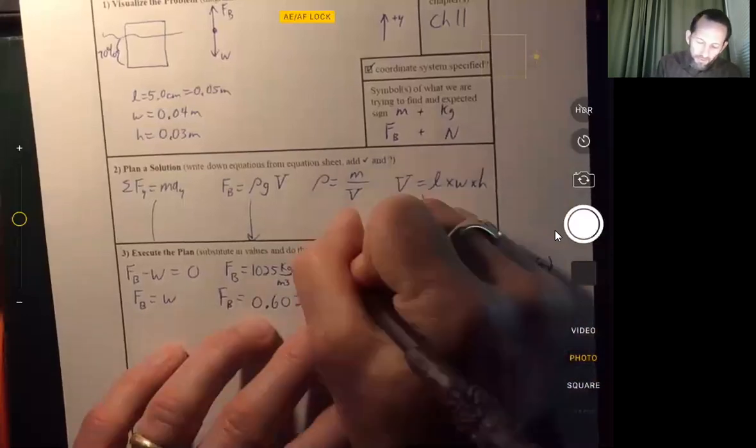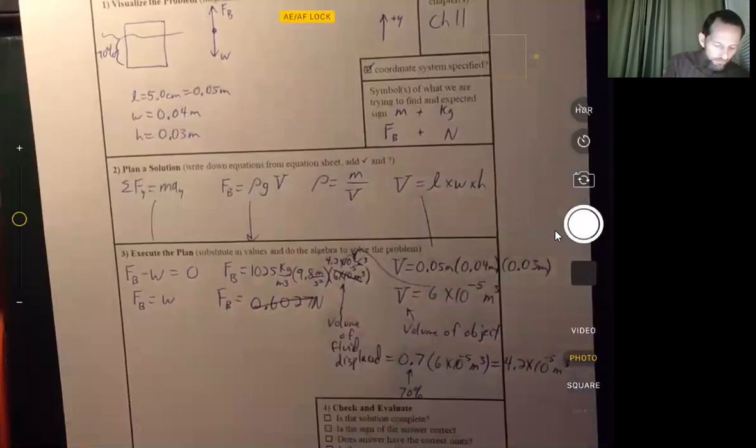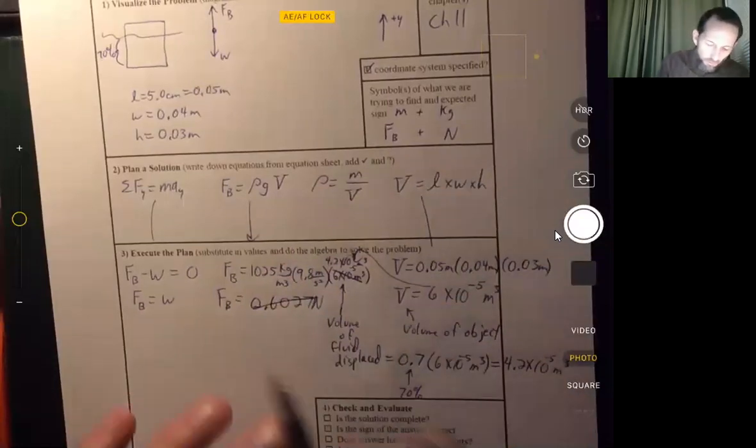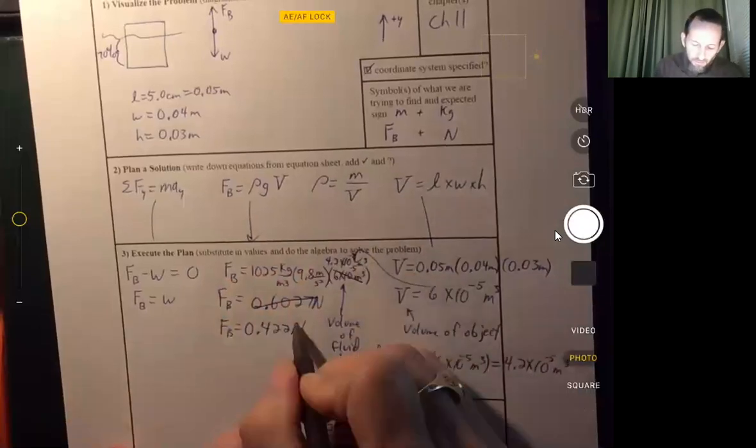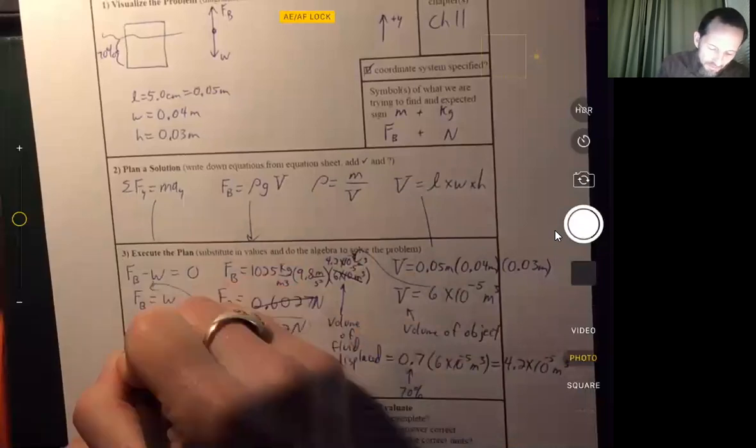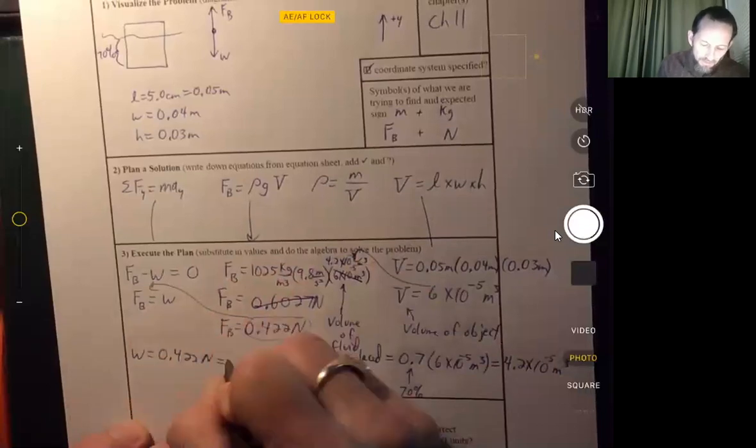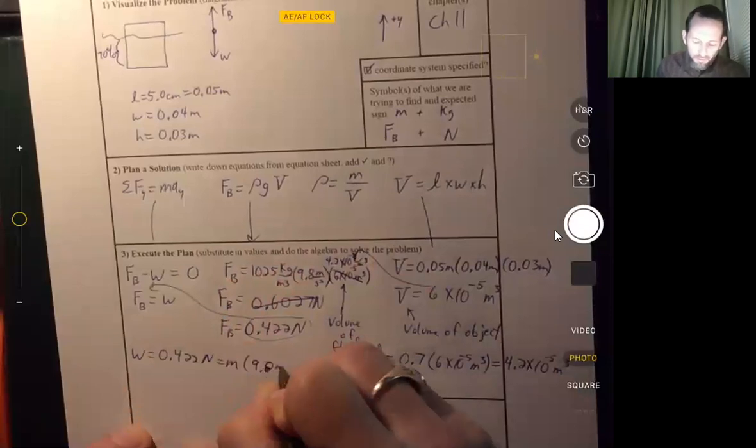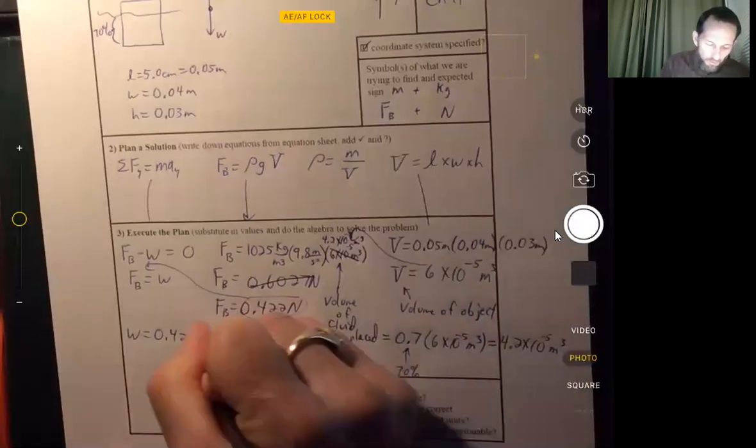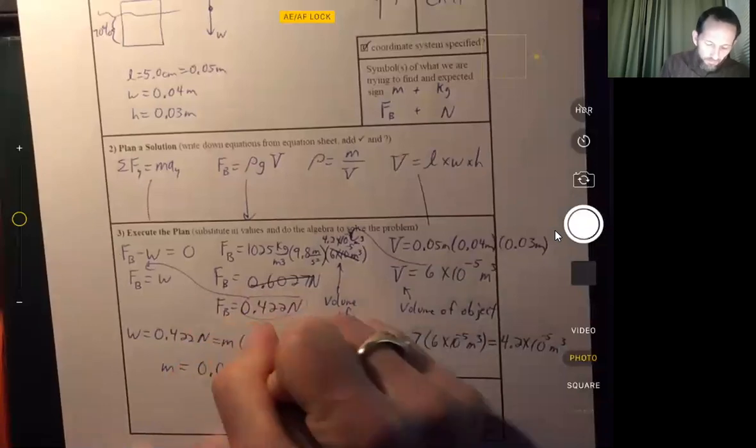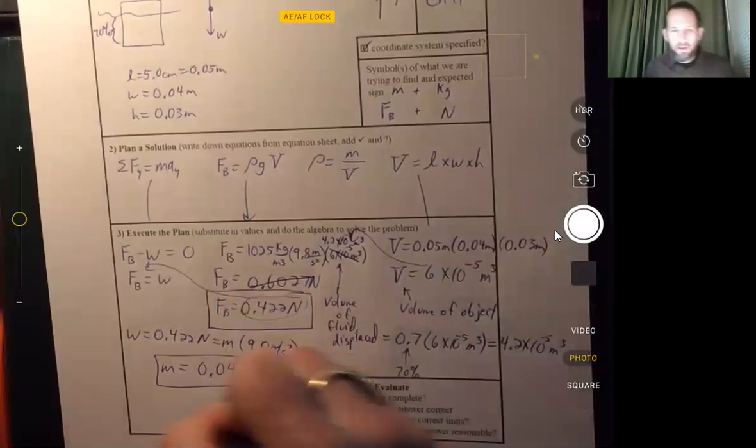And then we put that value in there, and that gives us a buoyant force of 0.422 newtons. Alright, then we can take that value and plug it in there. So we get a weight of 0.422 newtons, and that's equal to the mass times 9.8 meters per second squared. And so the mass comes out to 0.0431 kilograms. So there we've got our buoyant force, and there we have our mass.